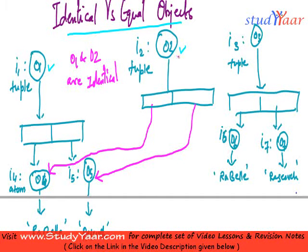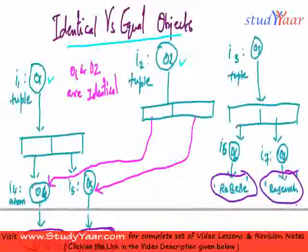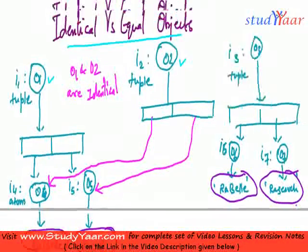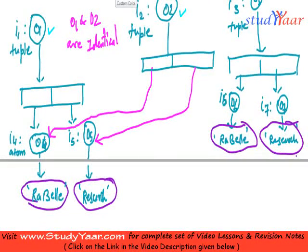Now let's look at O2 and O3. Although they have the same structure and the same atomic values in those structures — the first value in O3 is 'rebel', similarly the first value in O2 is 'rebel', while the second value in O2 is 'research' and the second value in O3 is 'research' — they do not point to the same objects. Hence, we call O2 and O3 equal objects.